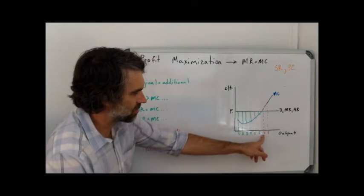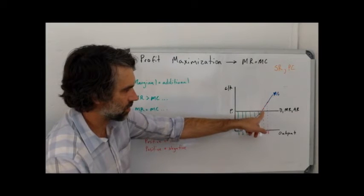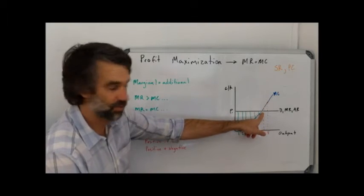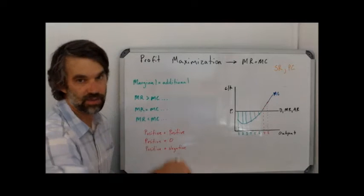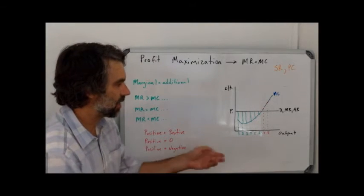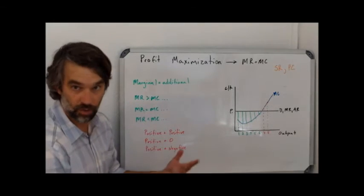Once I get past six though, so the next unit of output is seven, the marginal cost is greater than the marginal revenue. Therefore, now I'm starting to add a negative number, so my overall profit is going to decline. That, of course, is true for eight and will be true as far out as we want to go from that point.